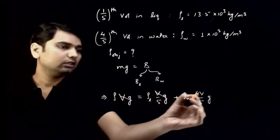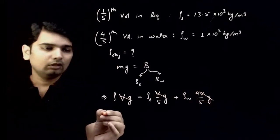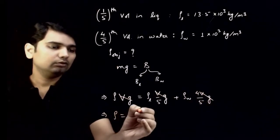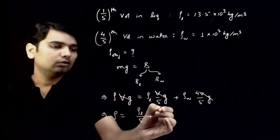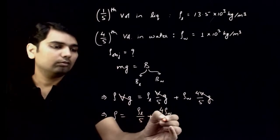So first of all, Vg from Vg from Vg. This implies density is equal to ρ liquid by 5 plus 4ρ water by 5.